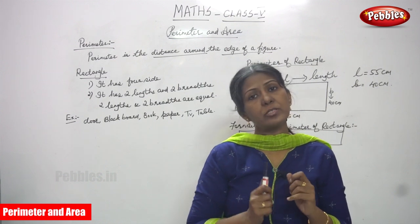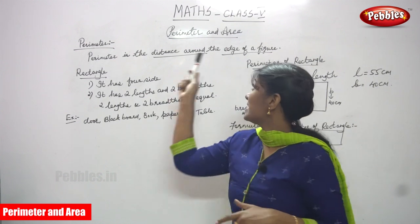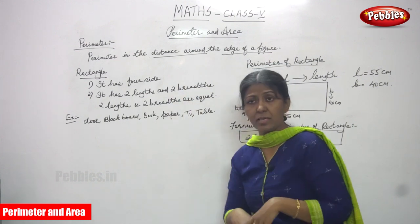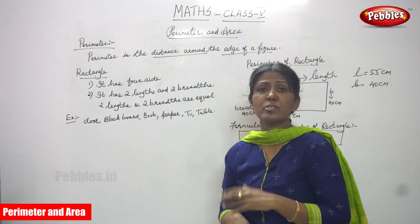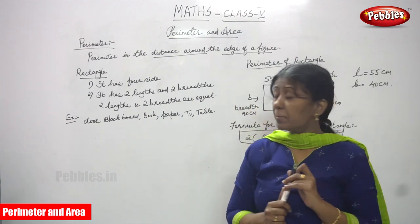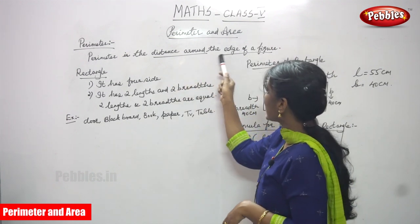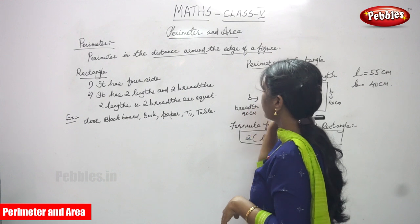We are going to see a new chapter: perimeter and area. First we must know what perimeter is. Perimeter is the distance around the edge of a figure.